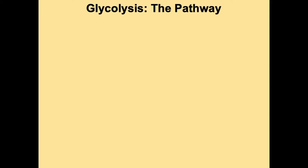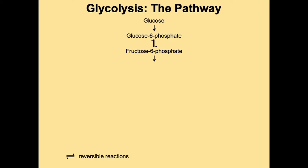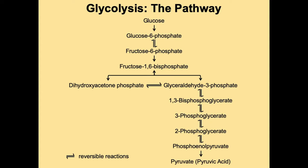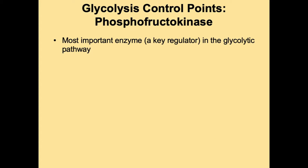The glycolysis pathway starts with glucose, which undergoes a series of enzymatic reactions to eventually produce pyruvate or pyruvic acid. You don't need to learn this pathway by heart — it's important to understand the key regulatory enzymes. The first enzyme we discuss is phosphofructokinase, which adds phosphate groups, converting fructose 6-phosphate to fructose 1,6-bisphosphate. This is the most important enzyme in glycolysis and a key regulation point.